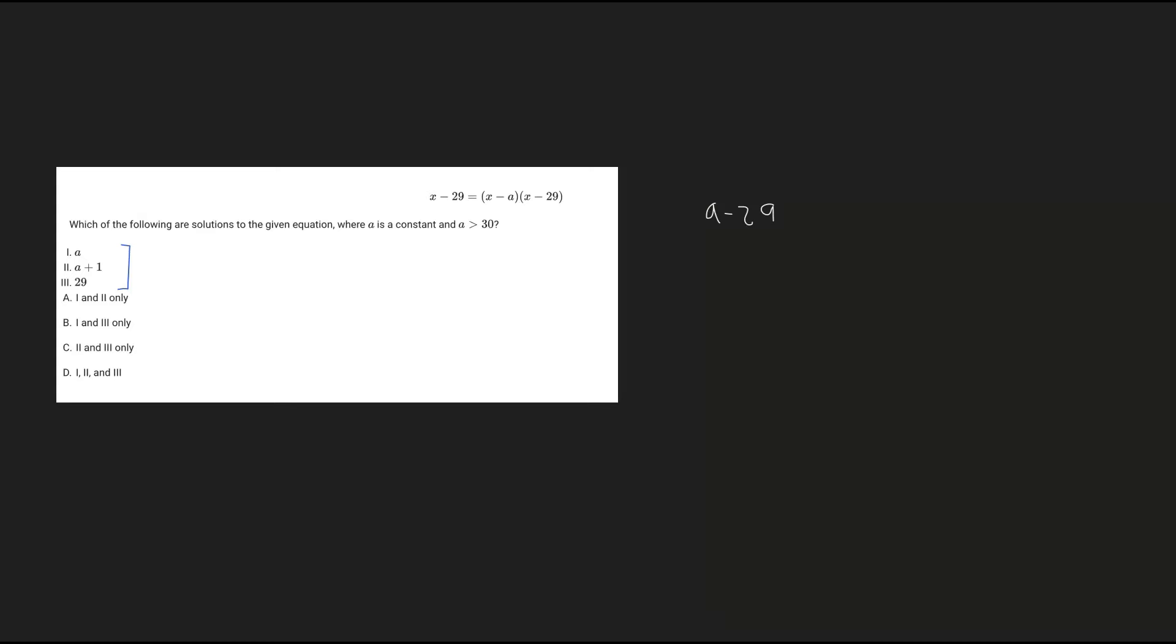On the other side, we're going to have x replaced with a, so we end up getting a minus a, and then that is going to be multiplied by x minus 29, which is just the same thing as before, a minus 29. Something interesting you'll realize here is that a minus a is equivalent to zero, and so anything we multiply here, say a minus 29, will be equivalent to zero.